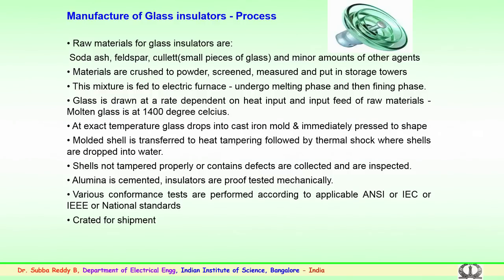The manufacture of glass insulators is a similar process to porcelain or ceramic insulators. The materials employed are basically soda ash, feldspar, and cullet — small pieces of glass — with minor amounts of other agents. These materials are crushed to a powdered form, properly screened, measured, and put into storage towers.